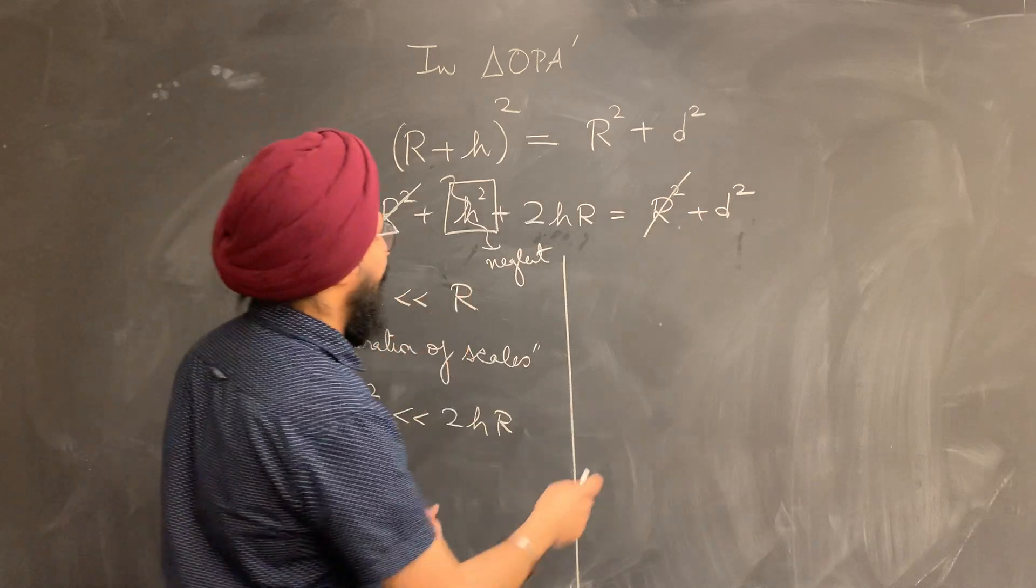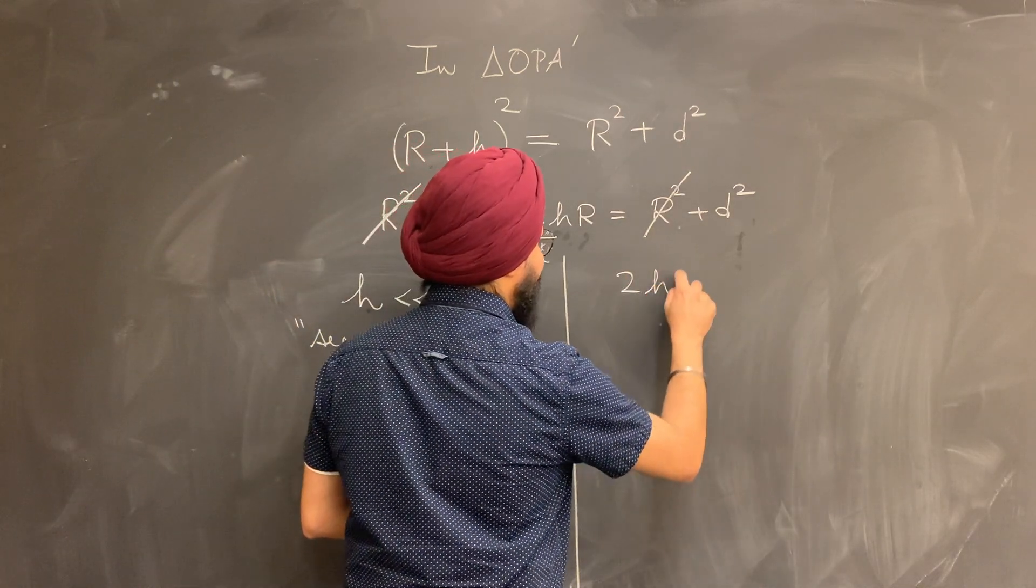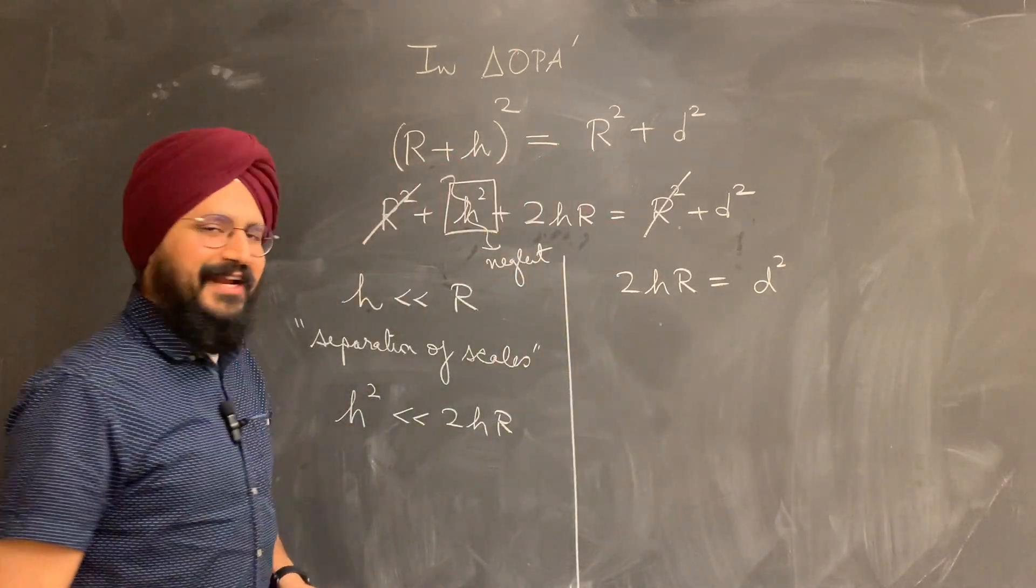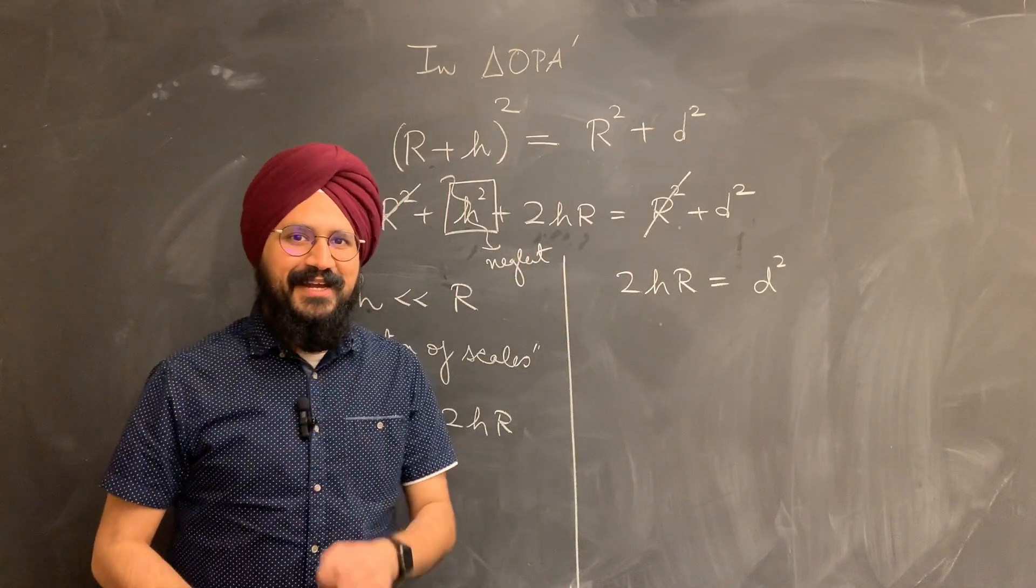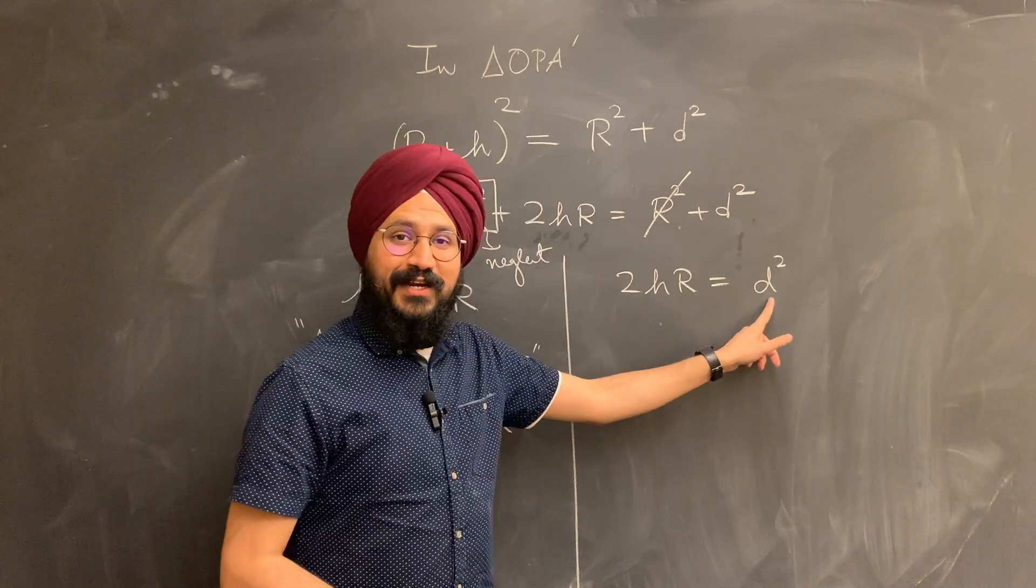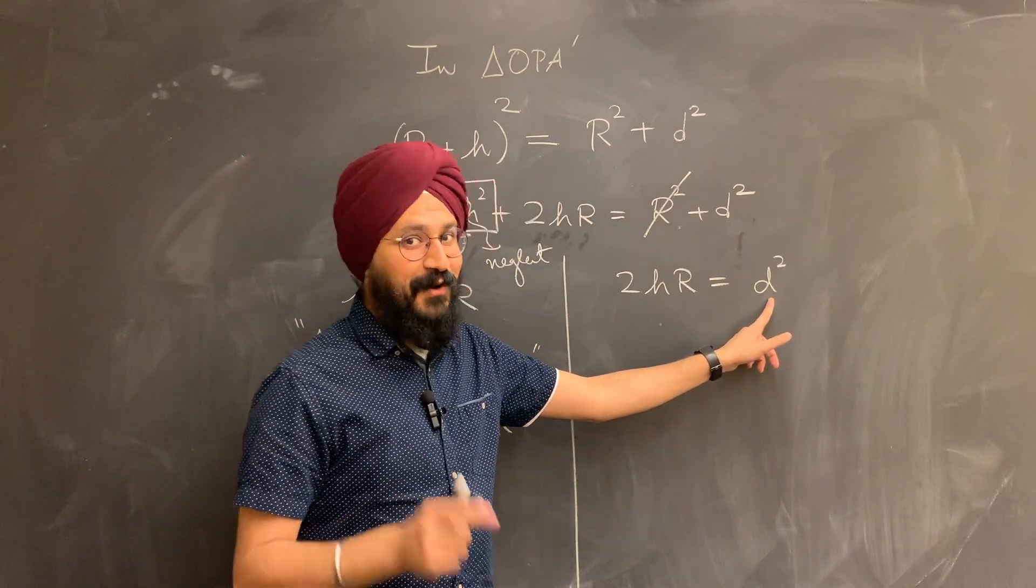And once you have this, my H-square piece is so much smaller than the 2HR piece, that this one can practically be neglected from the equation. So all I have left now, I basically have twice HR equals D-square. All right, that's looking a little bit better, and a little bit nicer, but the only issue is, I don't quite know what D is. Or do I?